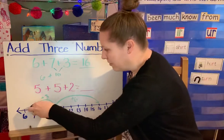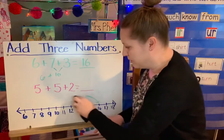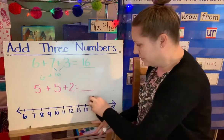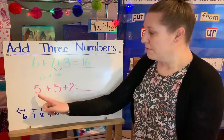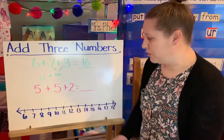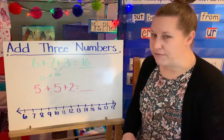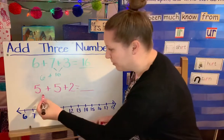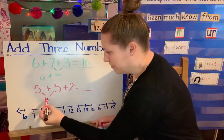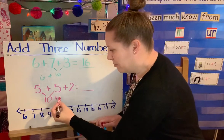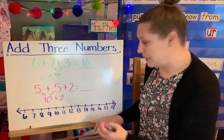We'll look at one other problem of adding three numbers using our making 10 strategy, which is the one here written in pink. 5 plus 5 plus 2 equals what? Thinking again — I know 5 plus 5 equals 10. That's a super easy one, isn't it? So that gives me 10. Now I've got 10 plus 2, and I know that 10 plus 2 equals 12 because I know my teen numbers.